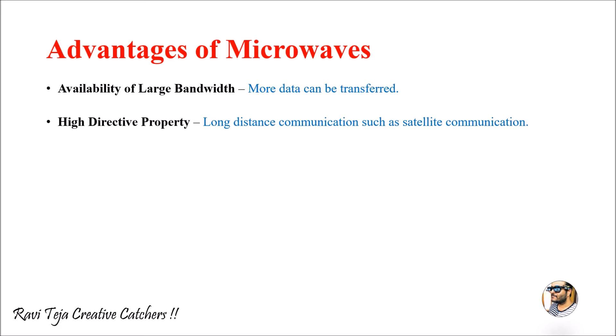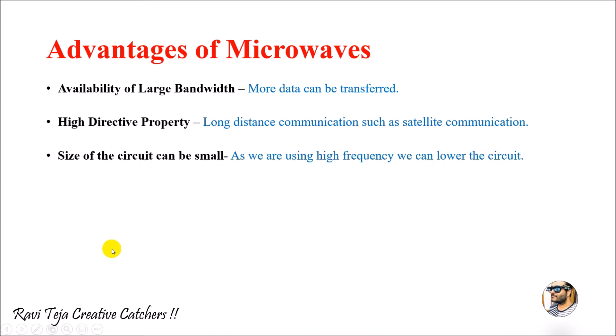The second advantage of microwaves is high directive property. As microwaves experience high frequencies, they give high directive property. High directive property leads to long distance communications. Long distance communications can also occur between satellites and from satellite to the earth station. Therefore, microwaves are mostly used for long distance communications like satellite communications.